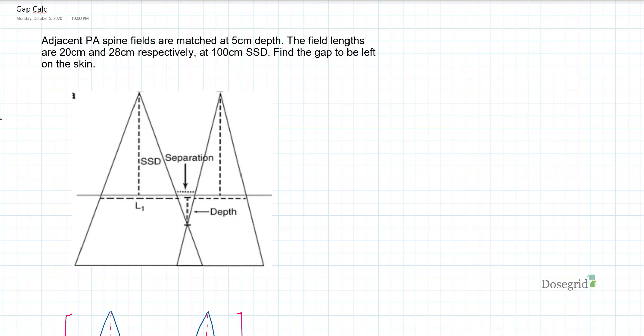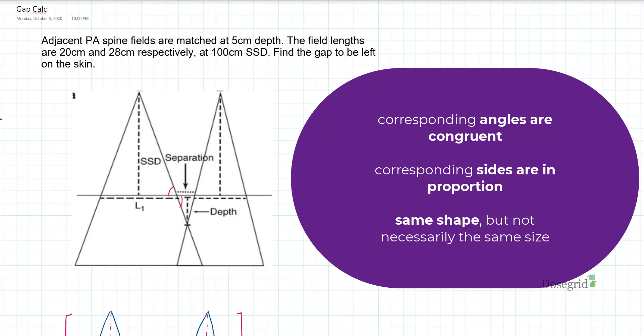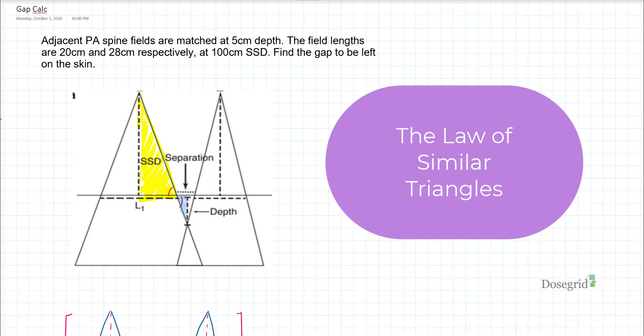Let's focus on the two triangles of interest here. This angle is congruent to this angle, so the sides of these two triangles correspond to each other. They are in the same ratio. This is the law of similar triangles.